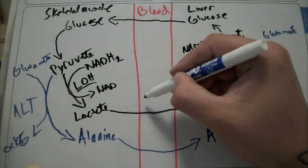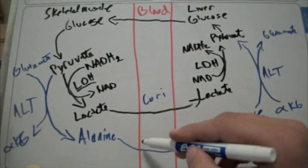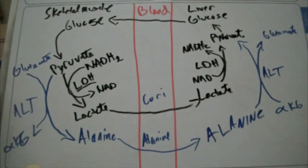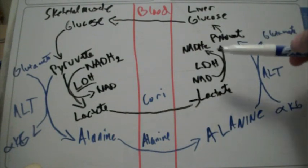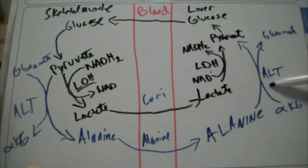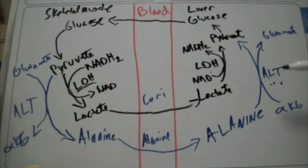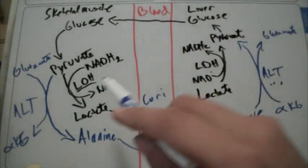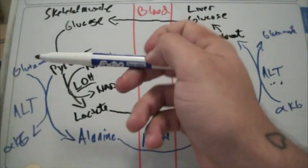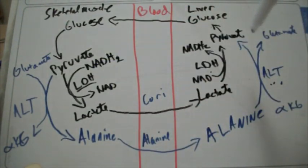So, we have our Cori cycle and our alanine cycle, with enzymes lactate dehydrogenase and alanine aminotransferase. Just note that what's going on in skeletal muscle is going on in reverse in the liver.